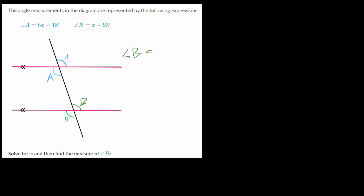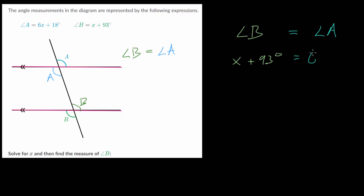The relationship is that angle B is equal to angle A, and from there we can set up an equation. We have angle B, which is x plus 93 degrees, and we set that equal to angle A, which is 6x plus 18 degrees. So let's now solve this equation.